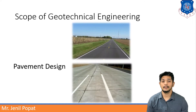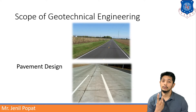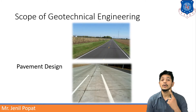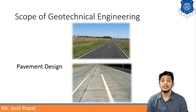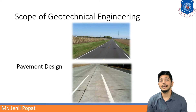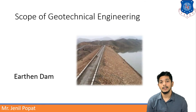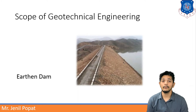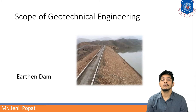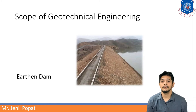Next is pavements, which are of two types: flexible pavement and rigid pavement. The first image shows a flexible pavement and the bottom image a rigid pavement. We can say a tarmac road is a flexible pavement and an RCC road is a rigid pavement. Next is earthen dams — made up of available materials near the site, they are constructed on a relatively low budget.